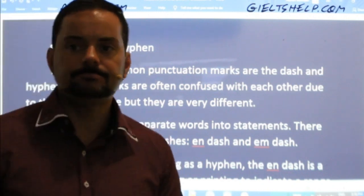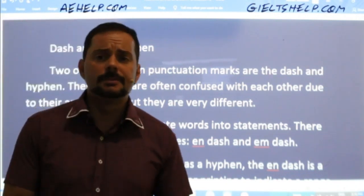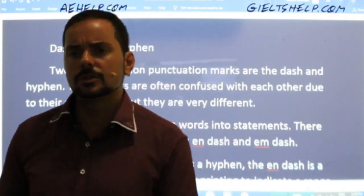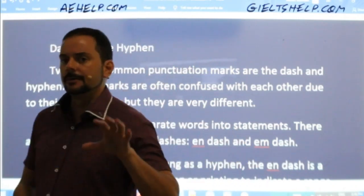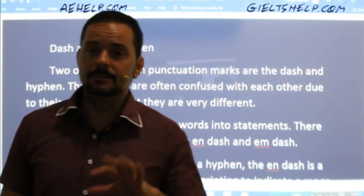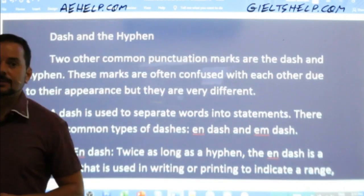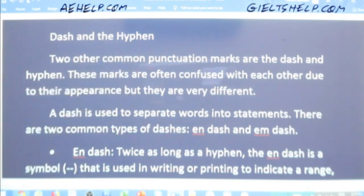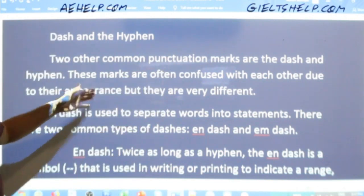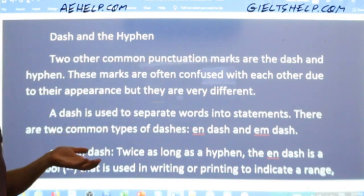Now let's talk about the dash and the hyphen. These are two common punctuation marks that are often confused with each other — people ask: when do I use one and not the other? A dash is used to separate words into statements. There are two common types: the N-dash and the M-dash. The N-dash is twice as long as a hyphen. In typing, the N-dash is represented as double hyphen, and the hyphen is the short single one.